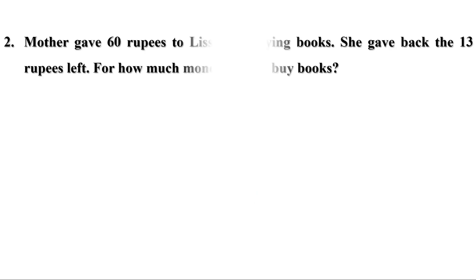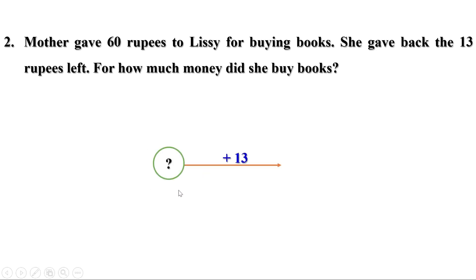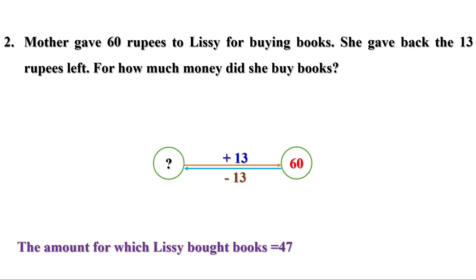Second problem: Mother gave 60 rupees to Lizzie for buying books. She gave back the 13 rupees left. For how much money did she buy books? When 13 is added to the amount used to buy books, it is 60. We need the amount before adding 13. When 13 is added it is 60, so do the reverse — subtract 13. What is 60 minus 13? It is 47. So the amount for which Lizzie bought books is rupees 47.